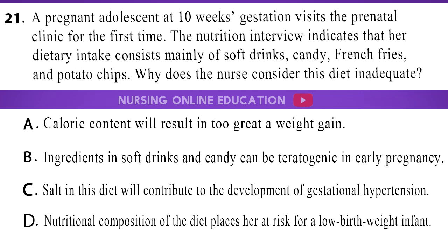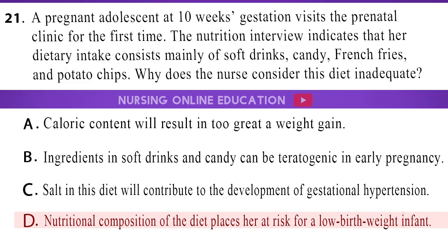Question 21: A pregnant adolescent at 10 weeks gestation visits the prenatal clinic for the first time. The nutrition interview indicates that her dietary intake consists mainly of soft drinks, candy, french fries, and potato chips. Why does the nurse consider this diet inadequate? A. Caloric content will result in too great a weight gain. B. Ingredients in soft drinks and candy can be teratogenic in early pregnancy. C. Salt in this diet will contribute to the development of gestational hypertension. D. Nutritional composition of the diet places her at risk for a low birth weight infant. The answer is option D: Nutritional composition of the diet places her at risk for a low birth weight infant.